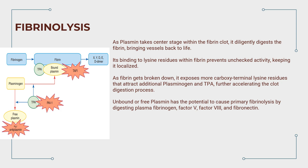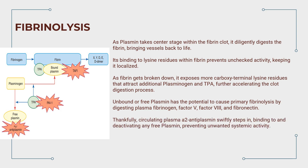Unbound or free plasmin has the potential to cause primary fibrinolysis by digesting plasma fibrinogen, factor V, and fibronectin. Thankfully, circulating alpha-2-antiplasmin swiftly steps in, binding to and deactivating any free plasmin, preventing unwanted systemic activity.